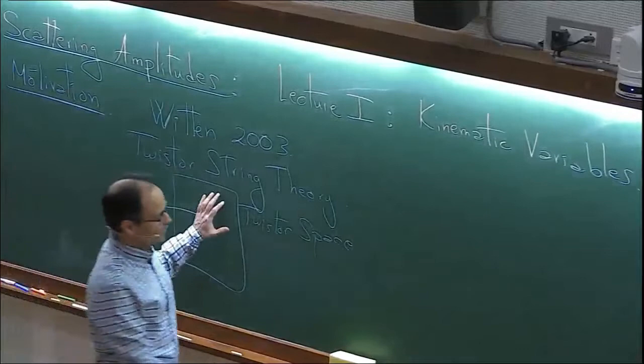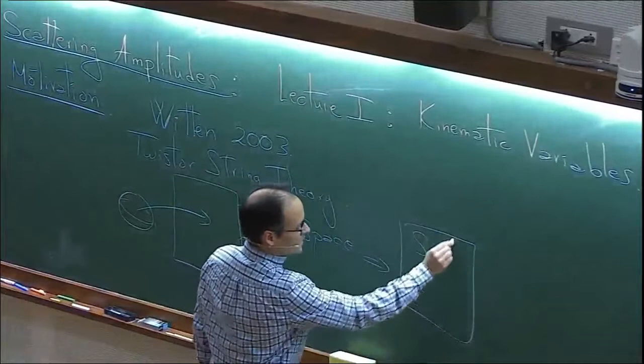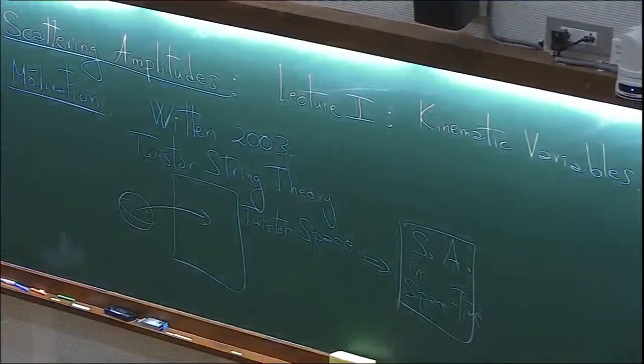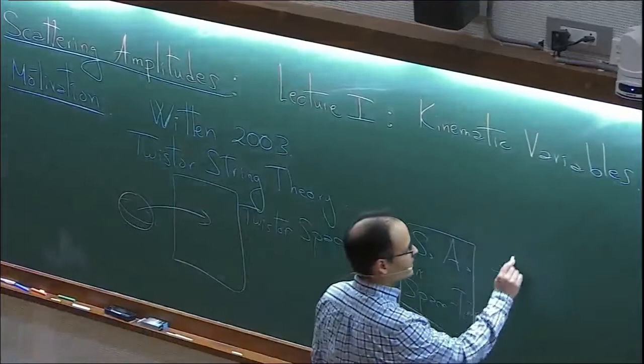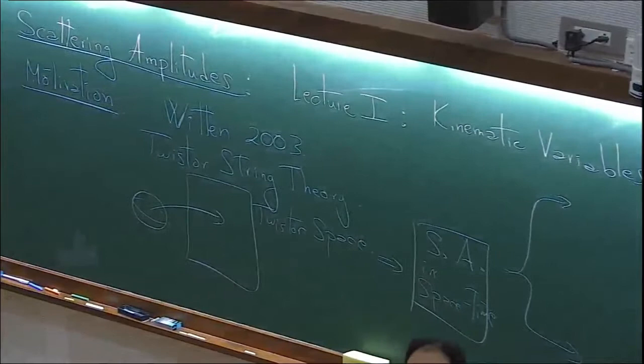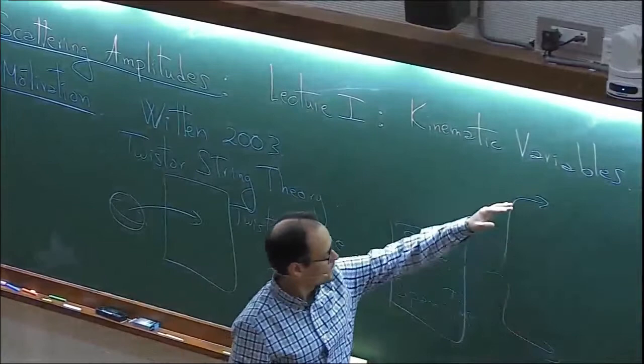The correlation functions of this object are supposed to compute scattering amplitudes in spacetime. Most talks would usually start with twistor string theory and explain how many things came out of there. But instead, I'm going to show you a couple of things that have come out of many years of research, with two very different applications of the techniques developed here.